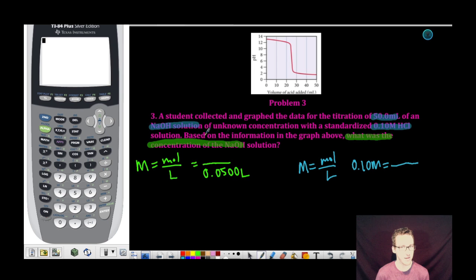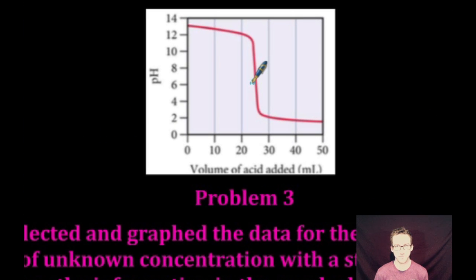It's not expressly given to me in the problem, but as I look at my graph, the equivalence point is going to occur at pH of 7 for a strong acid and a strong base. And what this means is that I must have used 25 milliliters or 0.0250 liters of HCl.